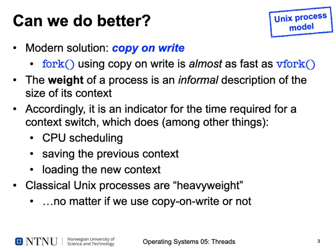The question is: can we be more lightweight? The term 'weight' is an informal description of the size of a process context — the heavier a process is, the more overhead it takes to administer, create a copy, or switch between processes. Process weight is an indicator for the time needed for a context switch, which involves scheduling the CPU, saving the complete context, and loading a new context.